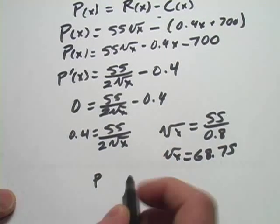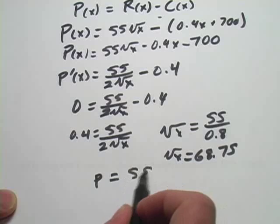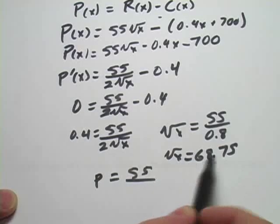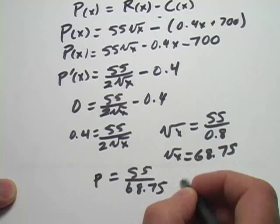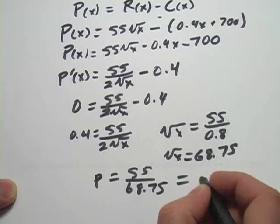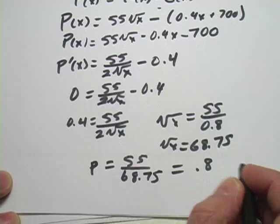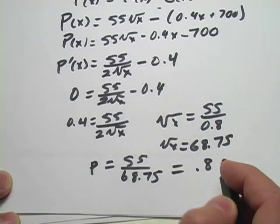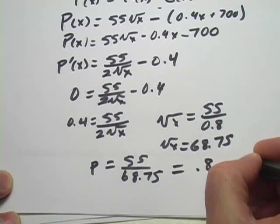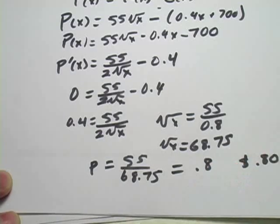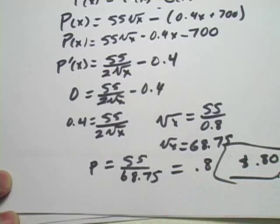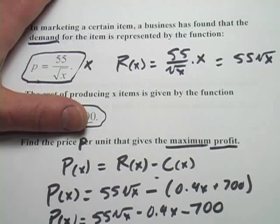So the demand function, p equals 55 over the square root of x, which is 68.75. And that is 0.8. So it looks like the best price here when we're maximizing profit is going to be 80 cents. All right, let's take a look at one more.